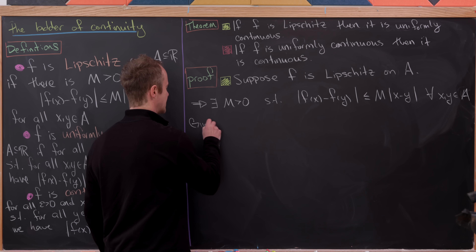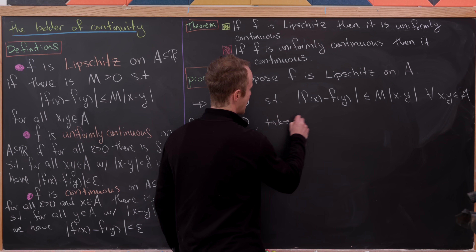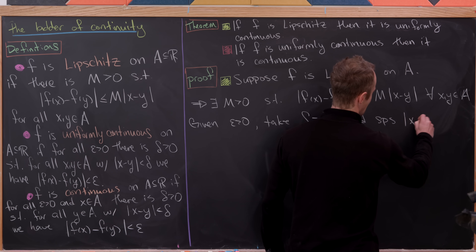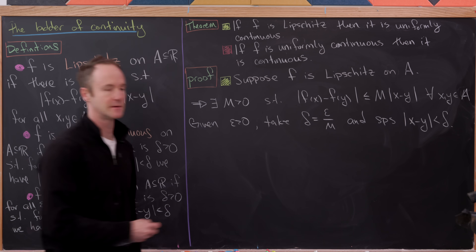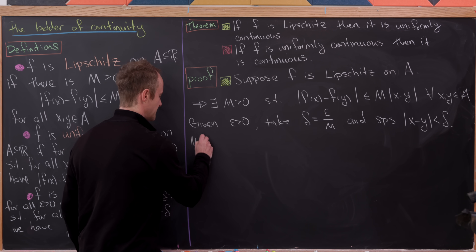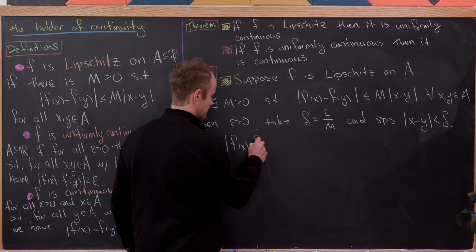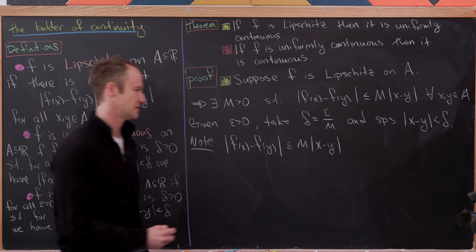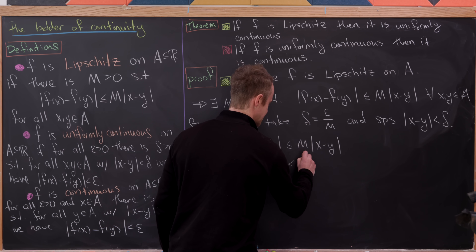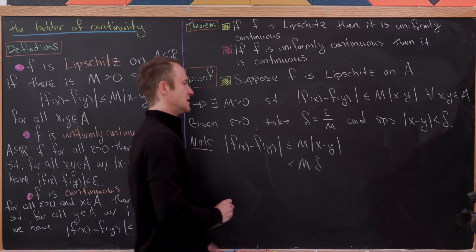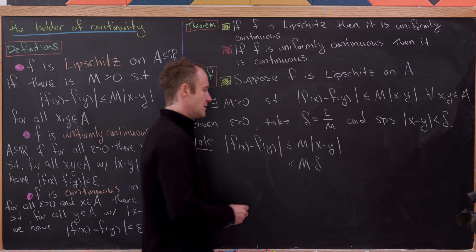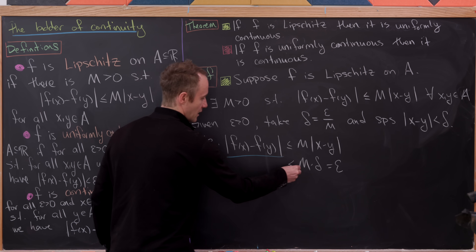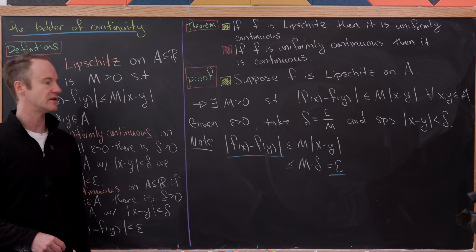Given epsilon greater than zero, let's take delta equal to epsilon over m, and suppose the absolute value of x minus y is less than delta. Then the absolute value of f(x) minus f(y) is less than or equal to m times the absolute value of x minus y by the Lipschitz condition, which is strictly less than m times delta, and since delta equals epsilon over m, that equals epsilon. This is exactly what we need for uniform continuity.